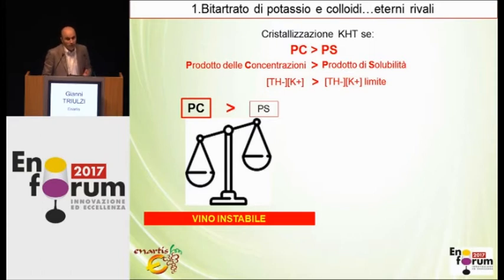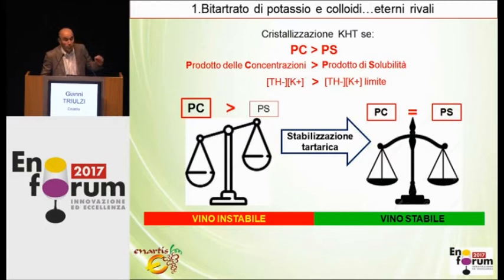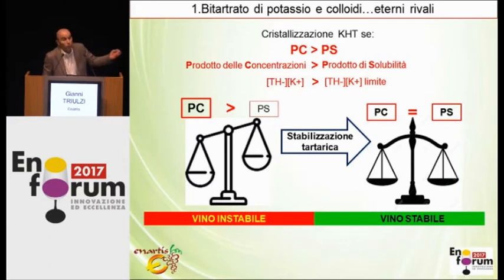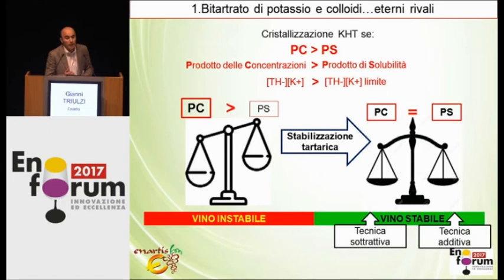What is tartaric instability? It is present in wines because the product of concentrations of tartaric and potassium ions normally exceeds the solubility product. So we have to stabilize. With tartaric stabilization, we try to bring the two things to the same level — we lower the product of concentrations, or we increase the solubility product. To lower the former, we have to take something away; hence we talk about subtractive techniques, which is the treatment par excellence. While additive techniques permit increasing the solubility product by adding protector colloids.